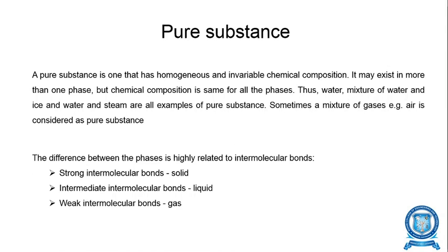A pure substance is one that has homogeneous and invariable chemical composition. It may exist in more than one phase — solid phase, liquid phase, and gaseous phase — but the chemical composition is the same for all phases. For example, consider water: the mixture of water and ice, and water and steam, are all examples. Air can also be considered a pure substance.